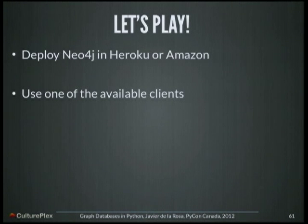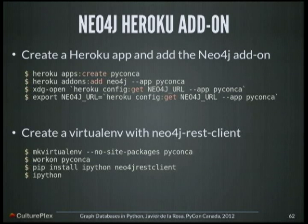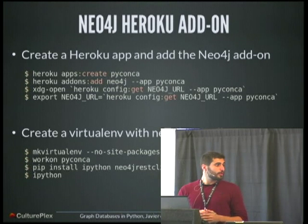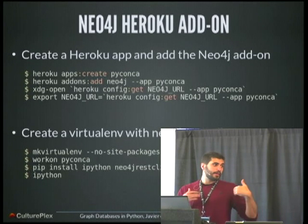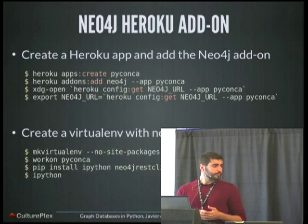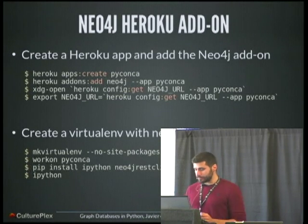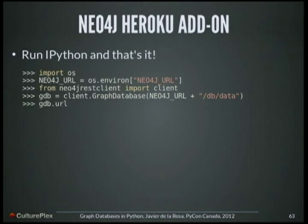And this is almost everything. If I wanted to deploy Neo4j, you can use Heroku or Amazon. It's really easy because there are already add-ons for Heroku to deploy Neo4j. You only have to create your application, then add the Neo4j add-on, get the Neo4j URL, create a virtualenv — always create your virtualenv — import the library, use the Neo4j URL, and that's it. You can start to play with your graph database.